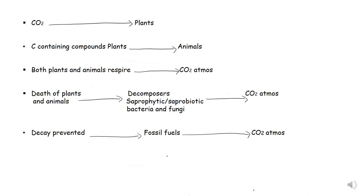So the first thing we've said before: carbon dioxide is taken up by plants via the process of photosynthesis. And the carbon-containing compounds in the plants get transferred into the animals via feeding.